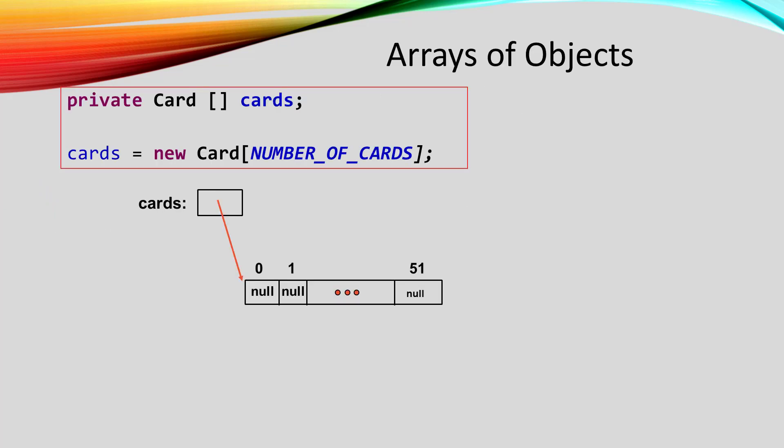Our instance variable was named cards and had the type array of card. In our constructor, we used the new statement to allocate space for 52 cards. Since a card is a reference type, that allocates space for 52 references.